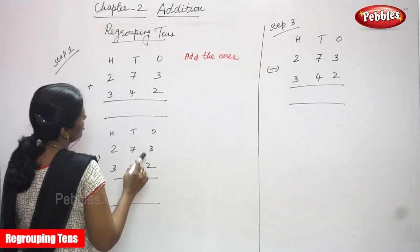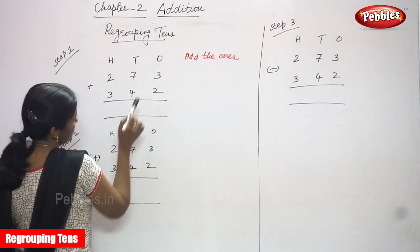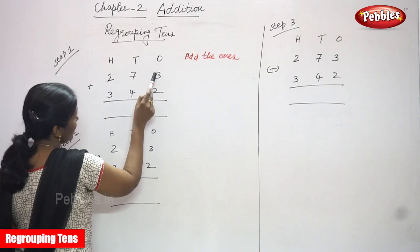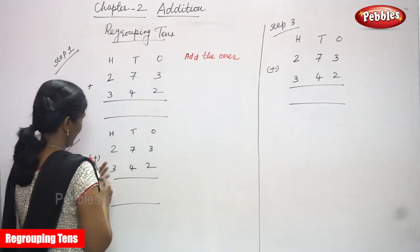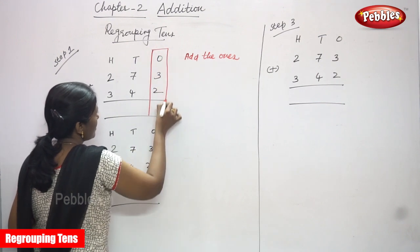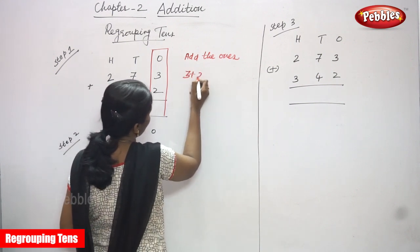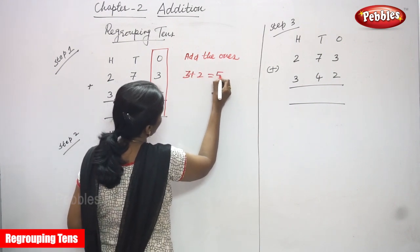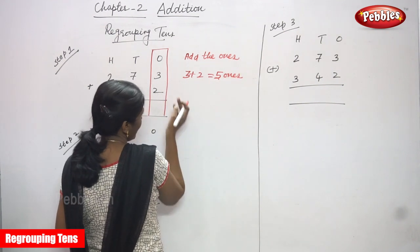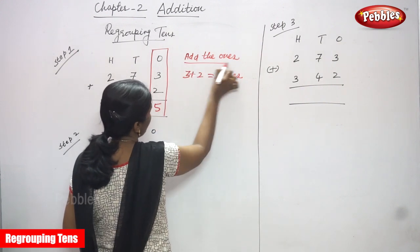First, we concentrate on the ones place value. What is the ones place value in each number? Three and two. We add the ones: three plus two. The answer is five — that is five ones. There is no carryover, so there is no tens place carryover. I just write five in the ones place.